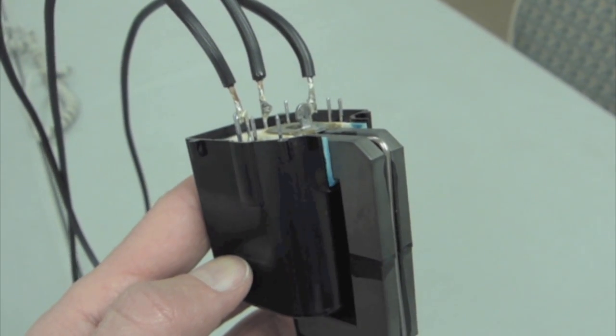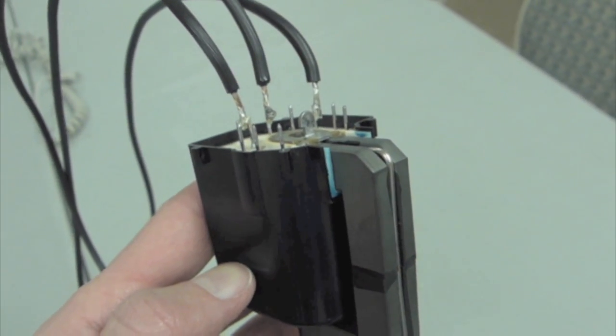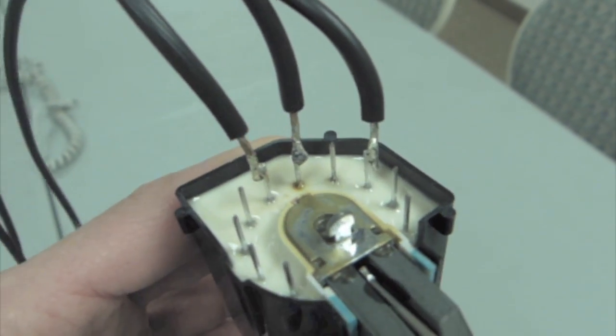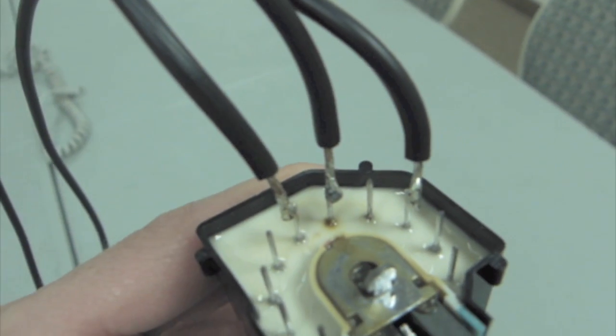I've now tested the flyback transformer, and sure enough it was pins 5 and 8. So I've soldered a wire onto pins 5 and 8, and another wire onto pin 6.